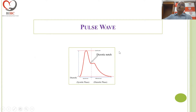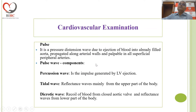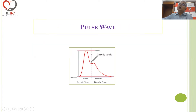In the normal pulse trace, you see only the percussion wave and the dicrotic wave. You don't see the reflectance waves, so the tidal wave is not recognized.